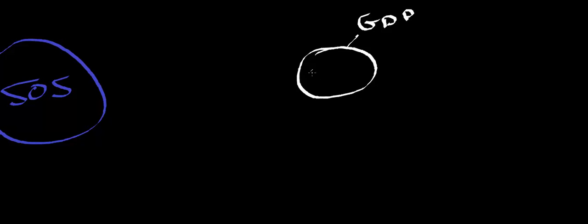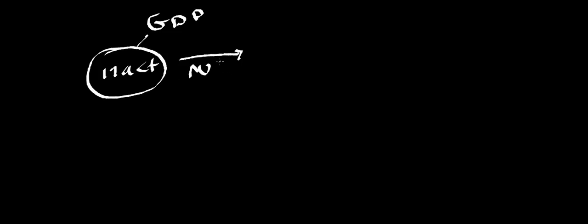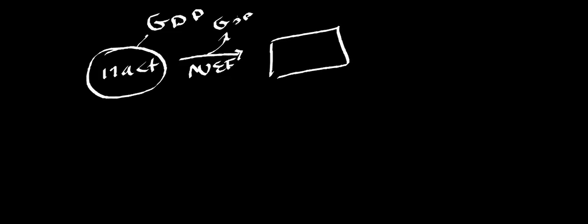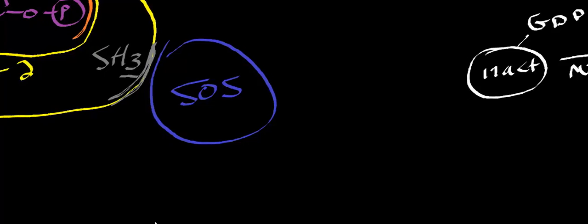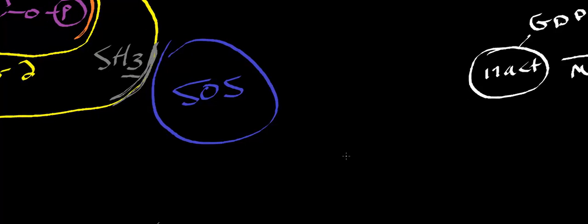Let's do an example. Let's say you have a protein that's inactive and it has bound GDP. What the guanosine nucleotide exchange factor does is it causes the release of GDP, and then the protein binds GTP and becomes active. Usually in the case of these proteins, they're acting on G-proteins. G-proteins are active when they have bound GTP and inactive when they have bound GDP. Son of Sevenless will catalyze the removal of GDP from a G-protein and attach GTP.